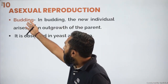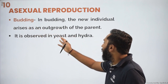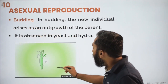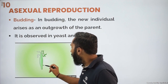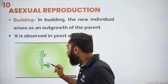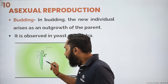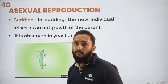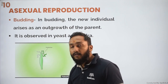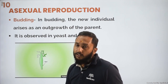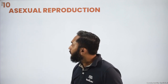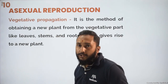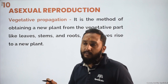Then budding, which you will see in the case of yeast and Hydra. A bud grows on the parent body, increases in size, and whenever it gets mature, it detaches from the parent body. This new individual will then do the same.